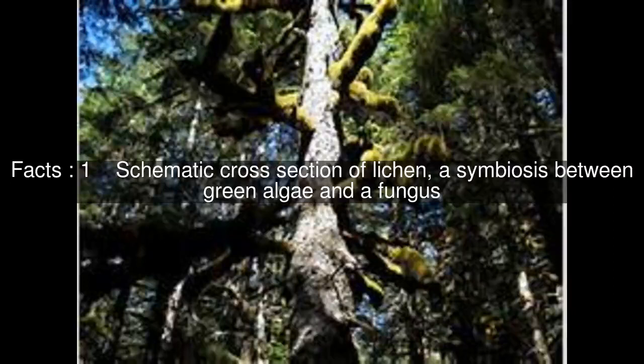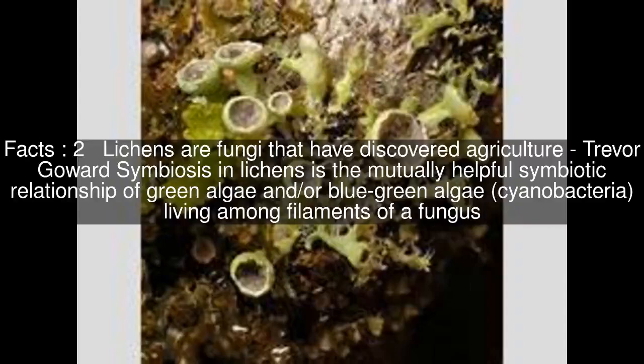Schematic cross-section of lichen, a symbiosis between green algae and a fungus. Lichens are fungi that have discovered agriculture, as Trevor Goward described. Symbiosis in lichens is the mutually helpful symbiotic relationship of green algae and/or blue-green algae, cyanobacteria, living among filaments of a fungus.